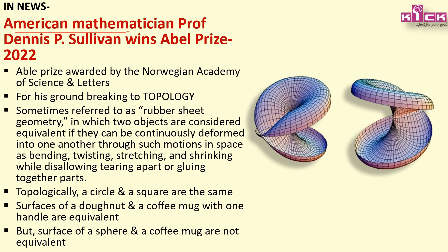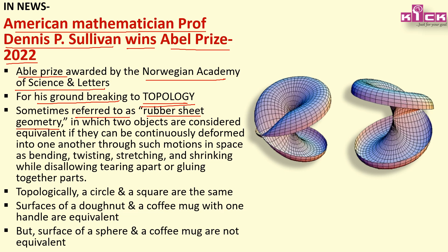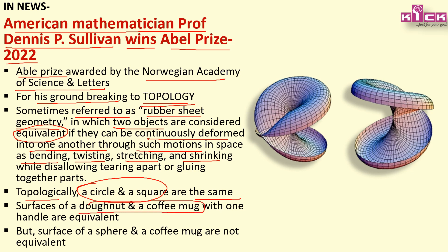News में - American mathematician Professor Dennis P. Sullivan won the Abel Prize 2022, awarded by the Norwegian Academy of Science and Letters for his groundbreaking topology, referred to as 'rubber sheet geometry.' Objects are considered equivalent if they can be continuously deformed into one another through bending, twisting, stretching, shrinking. जैसे circle और square को तोड़-मरोड़ दें तो both are equivalent. लेकिन donut and coffee mug with one handle is equivalent, but surface of sphere and coffee mug are NOT equivalent.